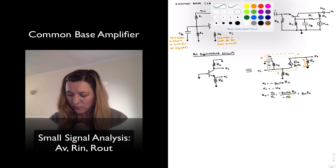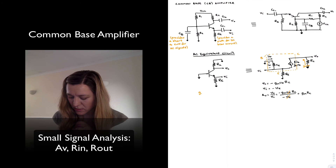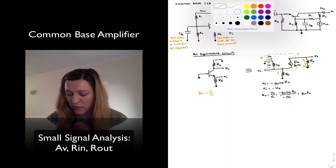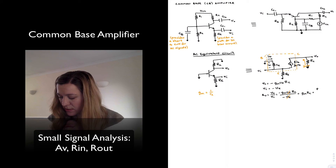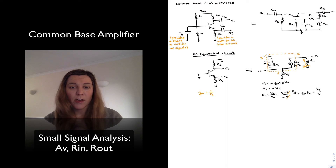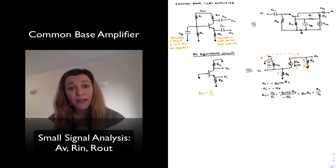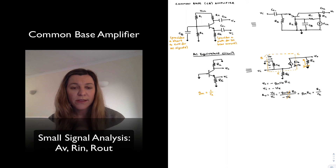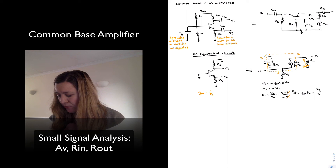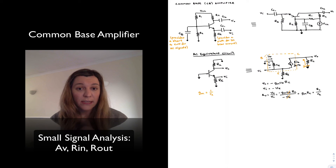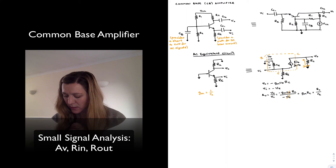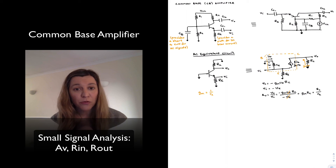GM is the transconductance of the amplifier, equal to 1 over little r_e. So the gain can be rewritten as RC divided by r_e, which should remind us of the expression for the gain of a common emitter amplifier — collector resistance over emitter resistance — except in this case it is a positive quantity, meaning there is no inversion from input to output. This is a non-inverting type of voltage amplifier. The gain can also be expressed as GM times the collector resistance.